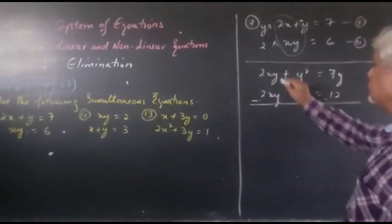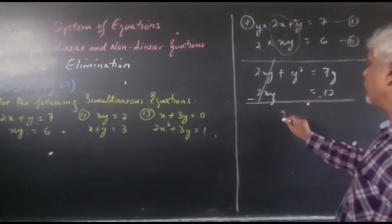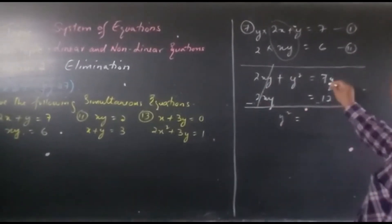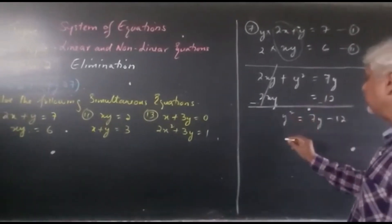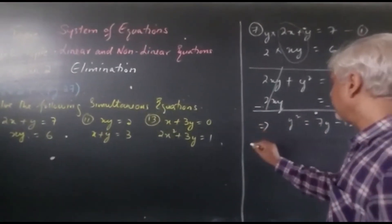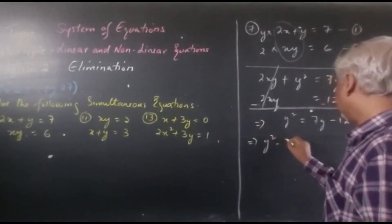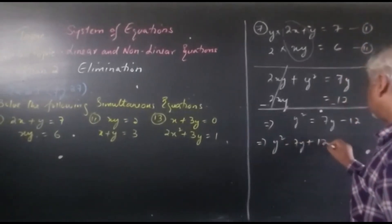So you are left with y squared equals 7y minus 12. Now let's bring this to quadratic form. Y squared minus 7y plus 12 equals 0.